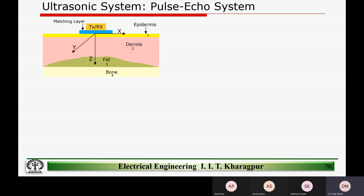If we denote the x-axis, y-axis, and z-axis: the x-axis is along the skin, y-axis is also in the same plane, and the z-axis is the one going inside the body. This is used for medical imaging — we want to find a profile of the body using sound waves and measuring the pulses.